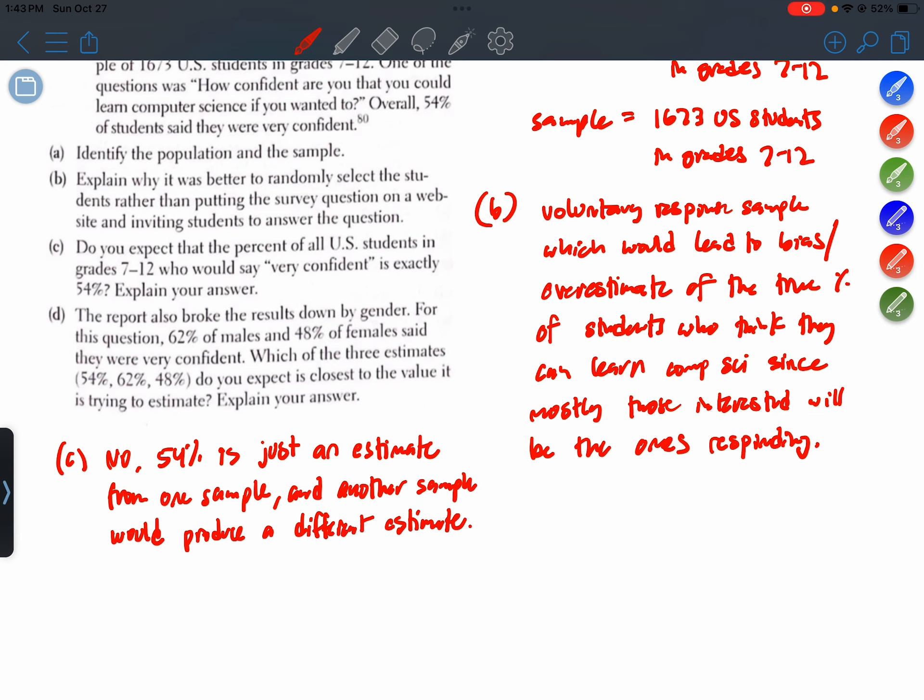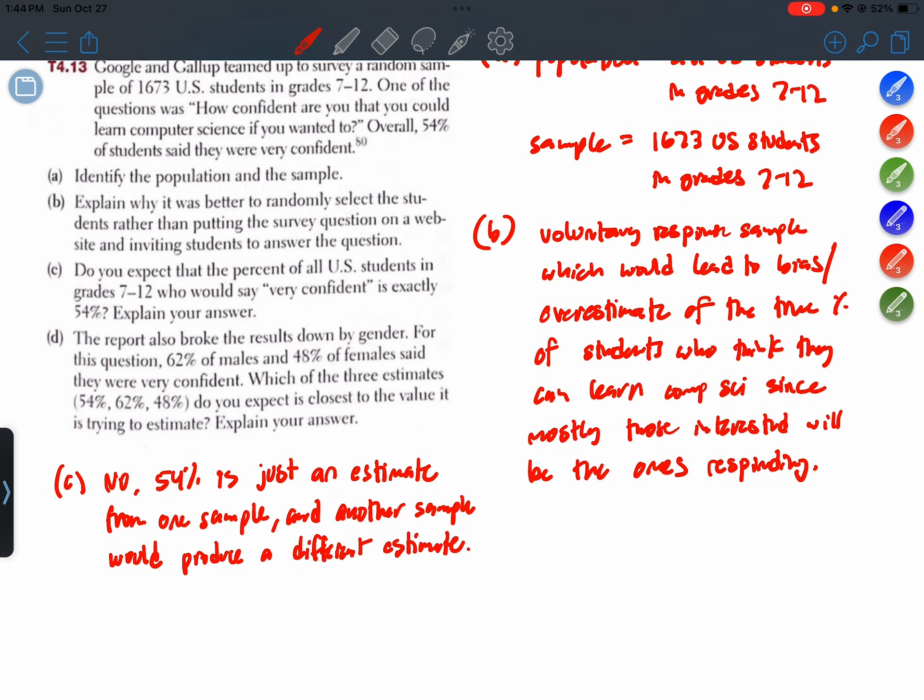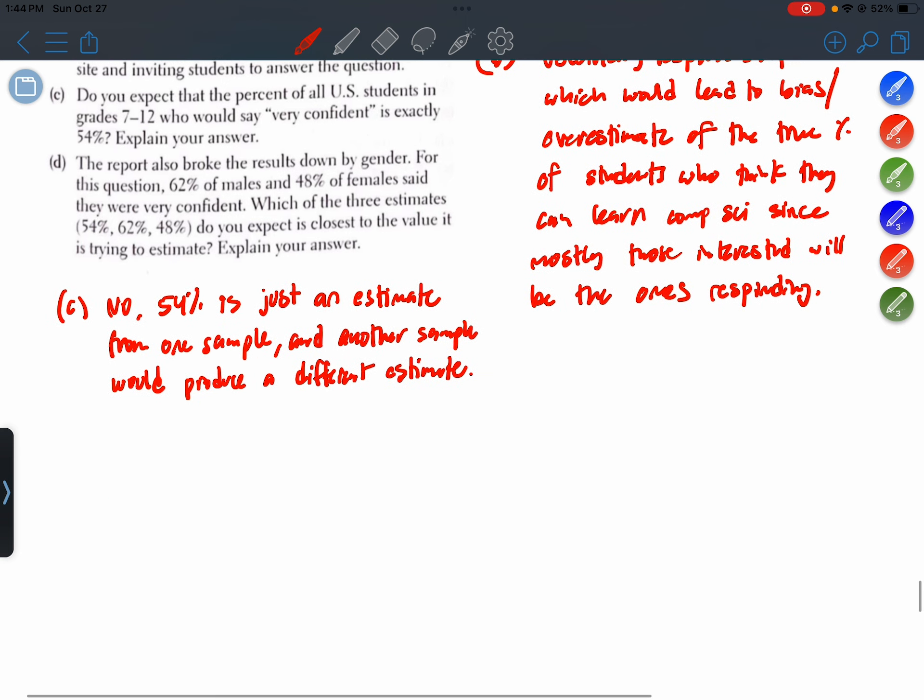The result or estimate we get from one sample to the next is going to be different because the second sample, although it might have 1,673 students, it's not going to have the same 1,673 students. It'll be a different collection, a different subset of students with different opinions. So samples only give hopefully good estimates or close estimates, but we never expect them to match the truth. An estimate is not the same as the truth.